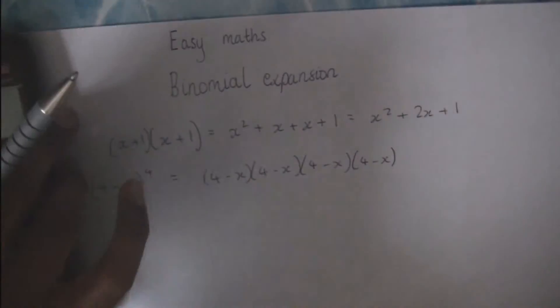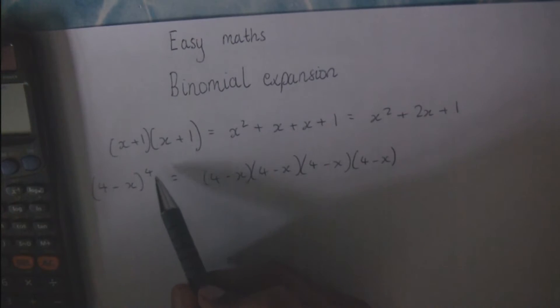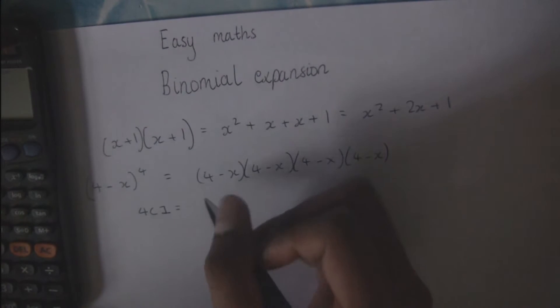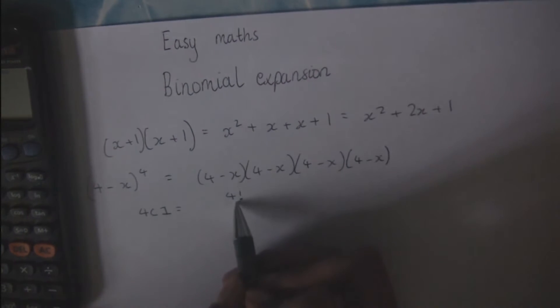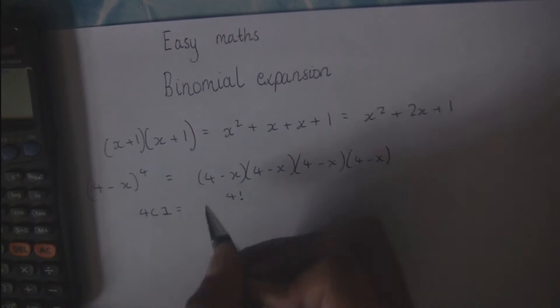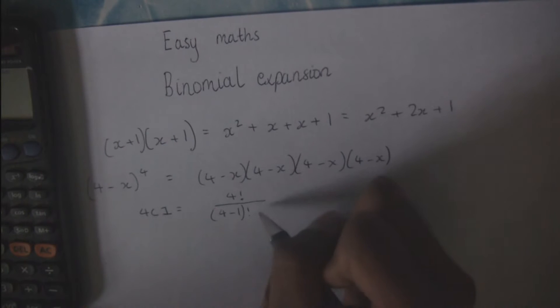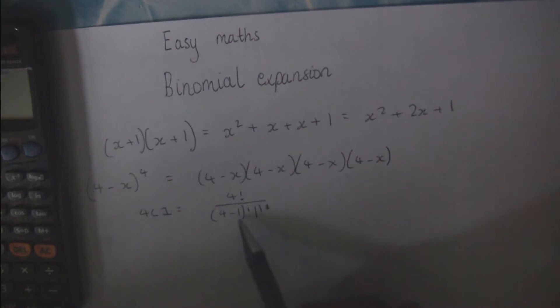What that C means — the number in front of the C is always the power, so for this question it will always be 4, because that's the number of brackets you have. So 4C1, for example, uses something called factorial. 4 factorial — written with an exclamation mark — means 4 times 3 times 2 times 1. So you have 4 factorial over (4 minus 1) factorial times 1 factorial, which gives you 24 over 6, which is 4. So 4C1 equals 4.